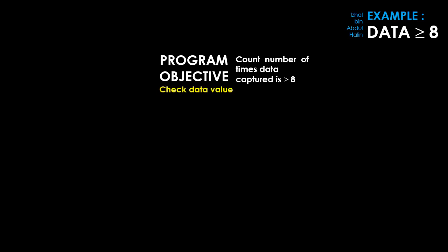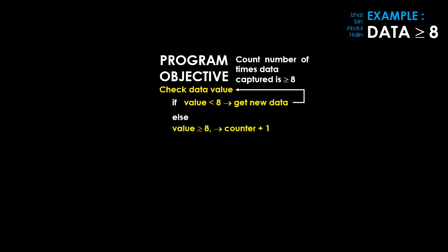Let's check out a program called "Data Greater Than 8." Its purpose is to scan through memory one byte at a time and count the number of times it encounters data with a value that is greater than or equal to 8. If the value encountered is less than 8, the program resumes scanning. When it encounters a value greater than or equal to 8, a counter is incremented by one, then it resumes scanning and the process repeats.